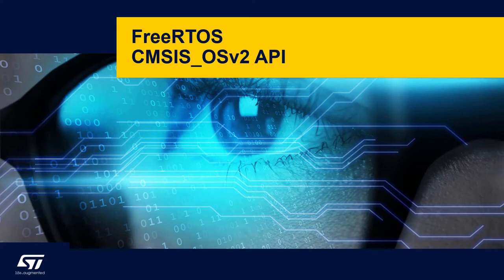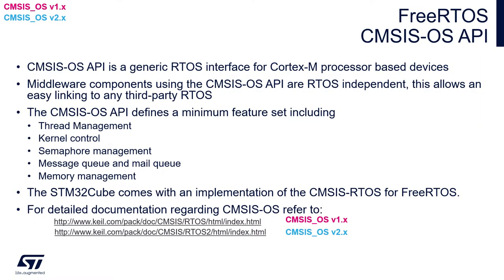Hello, let's focus on CMSIS-OS version 2 API, which will be used within all hands-on parts during this session. CMSIS-OS API is a generic RTOS interface for Cortex-M based devices like STM32. It has been designed by ARM for all implementations of Cortex-M devices. Middleware components using the CMSIS-OS API are RTOS independent, which allows easy linking of any third-party RTOS to your application.